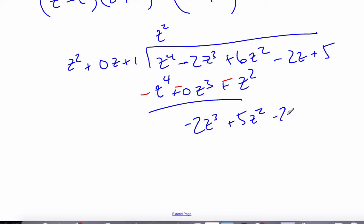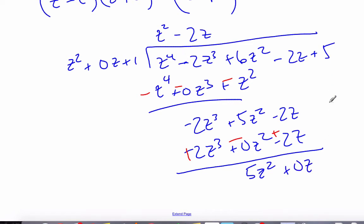Pulling down the minus 2z, multiply by negative 2z, minus 2z cubed plus 0z squared minus 2z. And I'm going to then subtract them, which gives me 5z squared plus 0z, pull down my 5, plus 5.